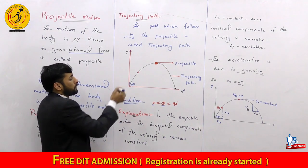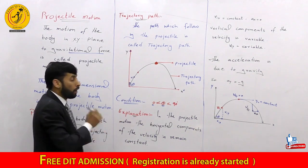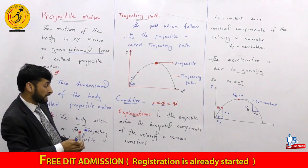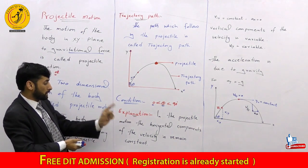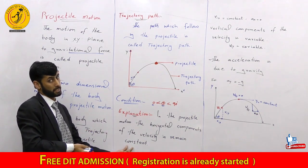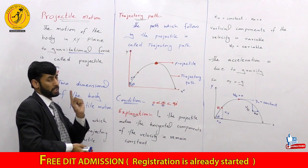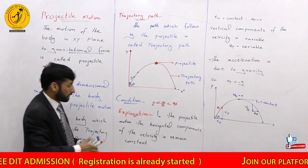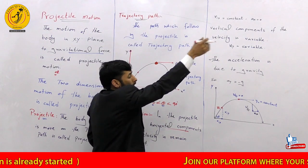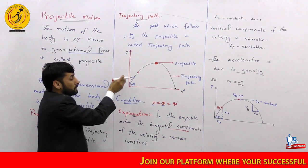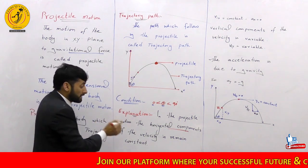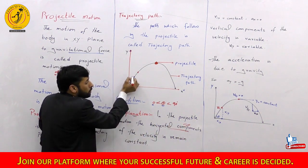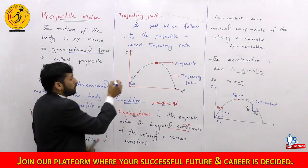The projectile motion involves velocity, represented as V. The horizontal components of the velocity remain constant throughout the projectile motion. The horizontal component of the projected velocity does not change. The horizontal components of the velocity remain constant.